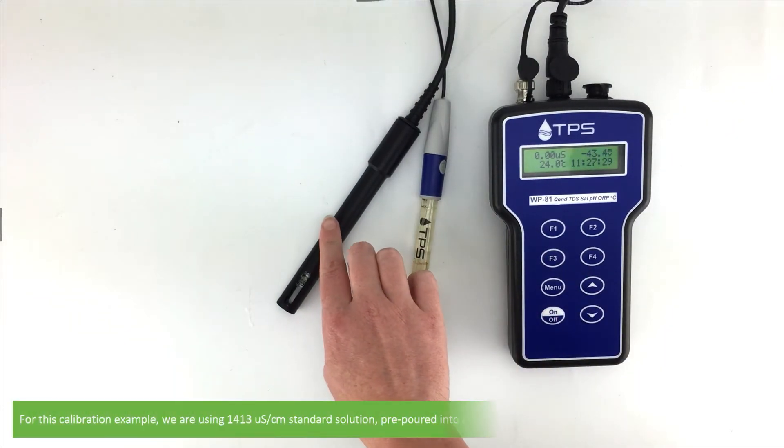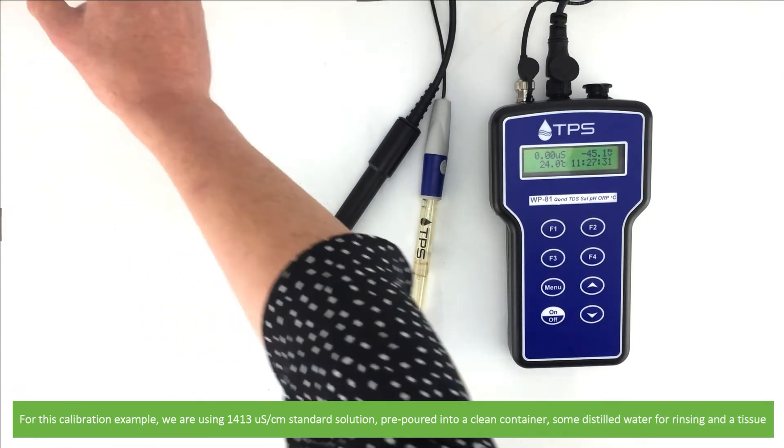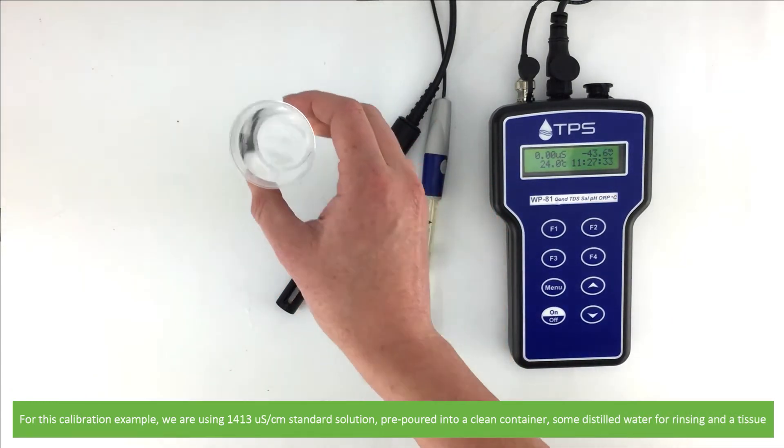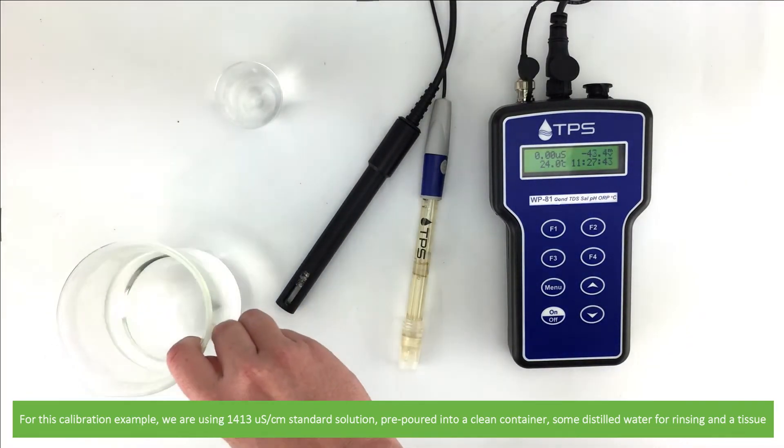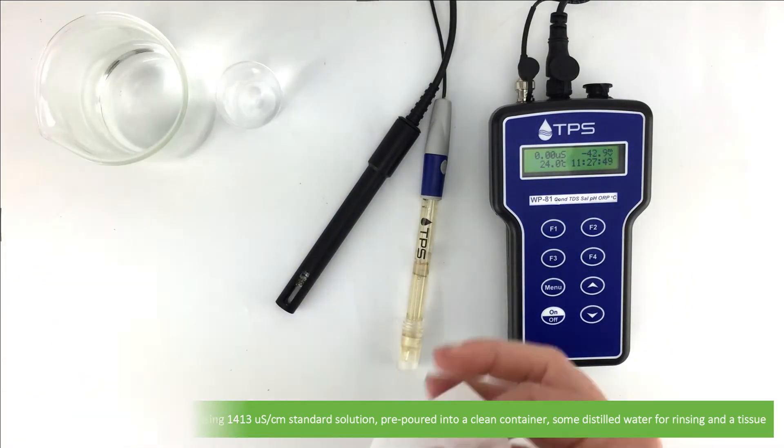For this example we are using 1413 microsiemens per centimeter standard solution pre-poured into a clean container, some distilled water for rinsing, and a tissue.